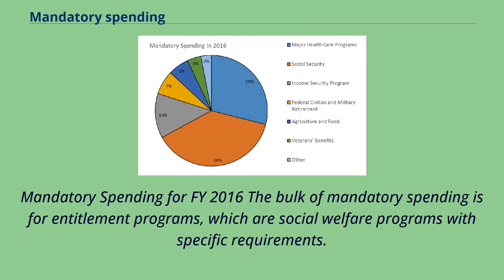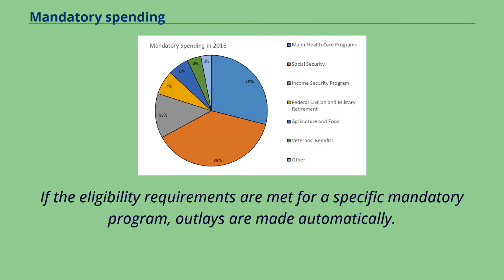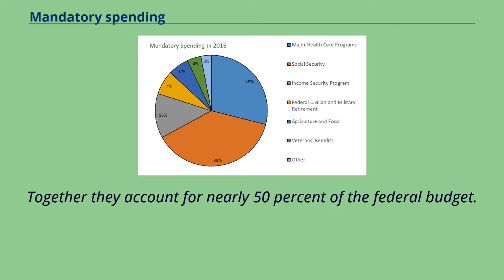The bulk of mandatory spending is for entitlement programs, which are social welfare programs with specific requirements. Congress sets eligibility requirements and benefits for entitlement programs. If the eligibility requirements are met for a specific mandatory program, outlays are made automatically. Entitlement programs such as Social Security and Medicare make up the bulk of mandatory spending, together accounting for nearly 50% of the federal budget.